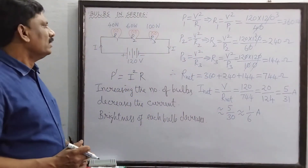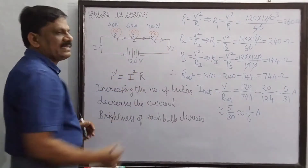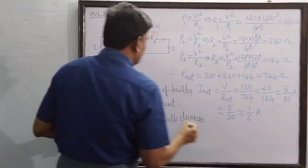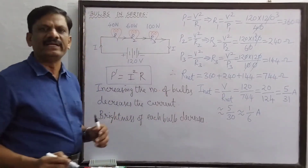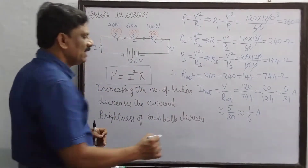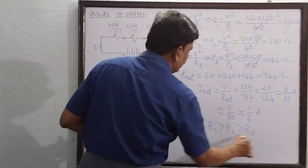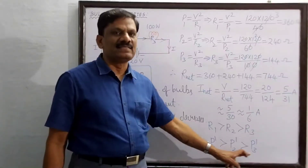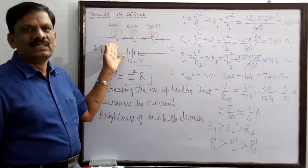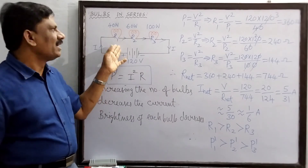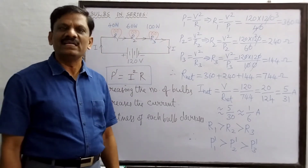The same current I flows through each bulb. The power dissipated by each bulb is P' = I²R. Since R1 > R2 > R3, we get P1' > P2' > P3'. Therefore, the power dissipated by the first bulb is greatest, so the 40-watt bulb will be the brightest and the 100-watt bulb will be the dimmest.